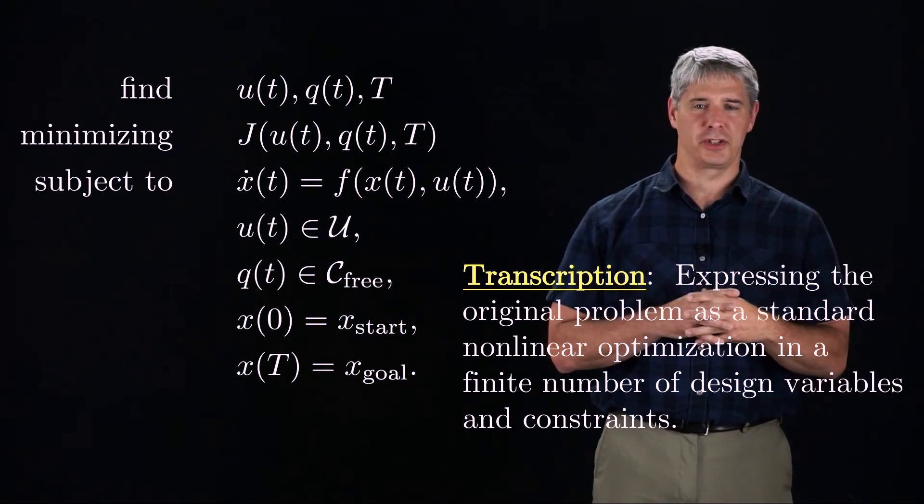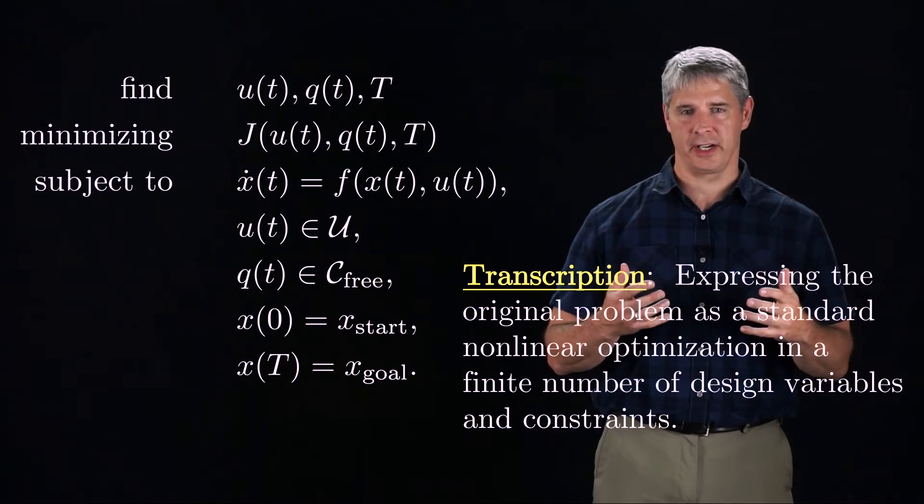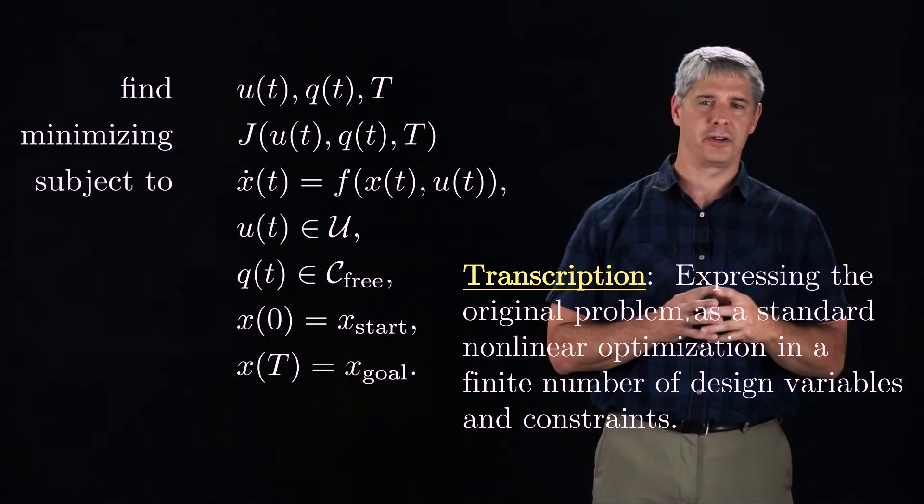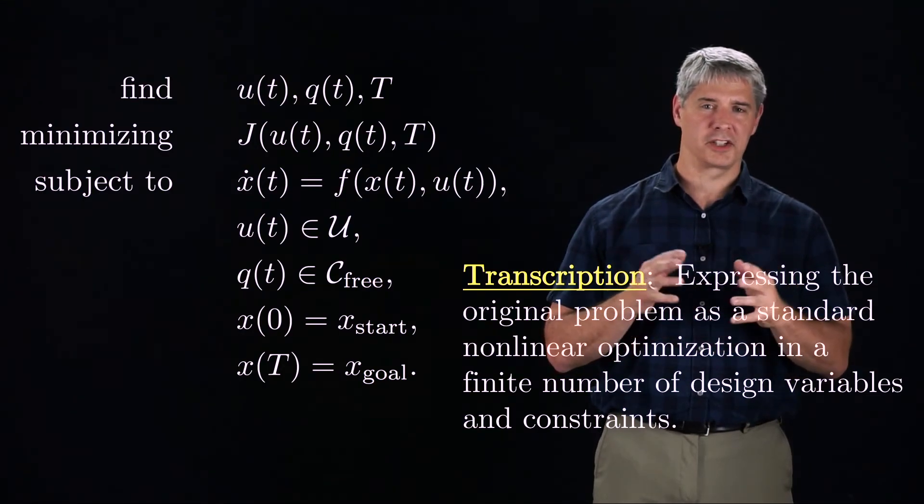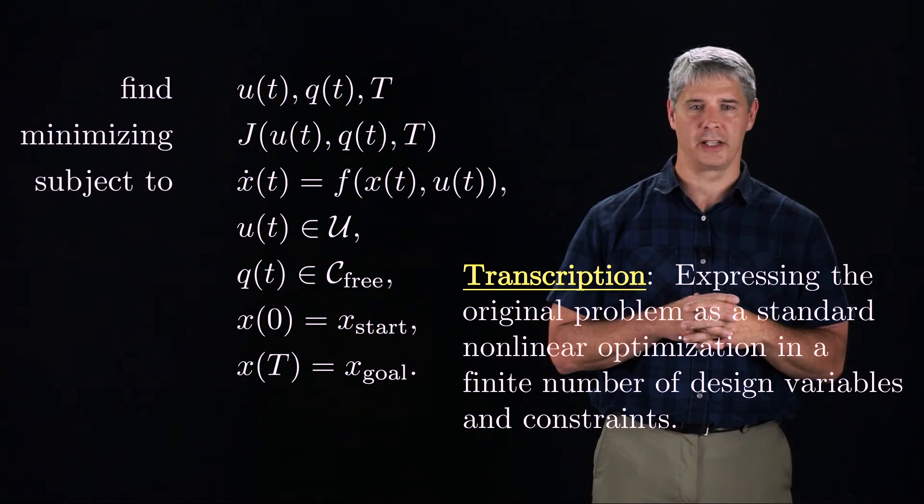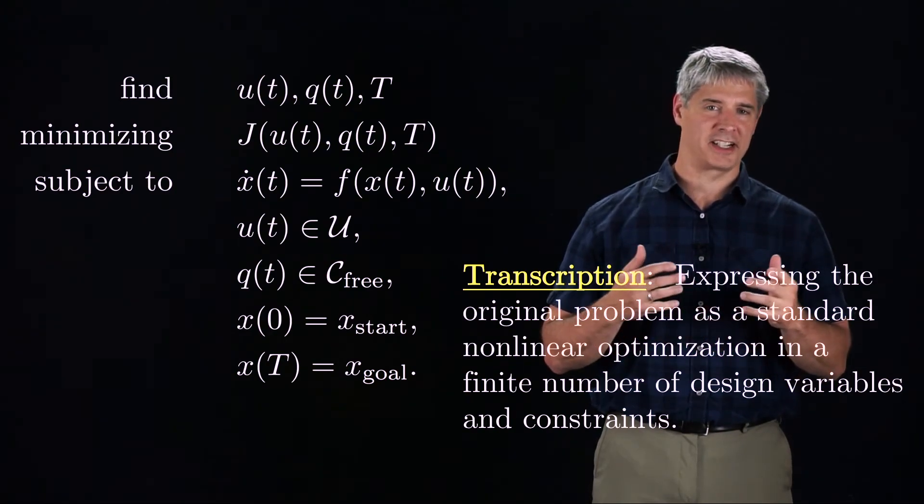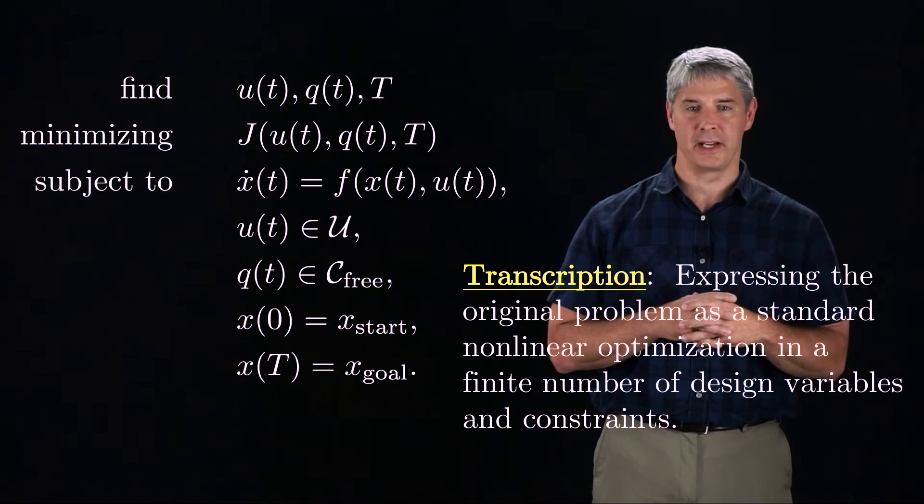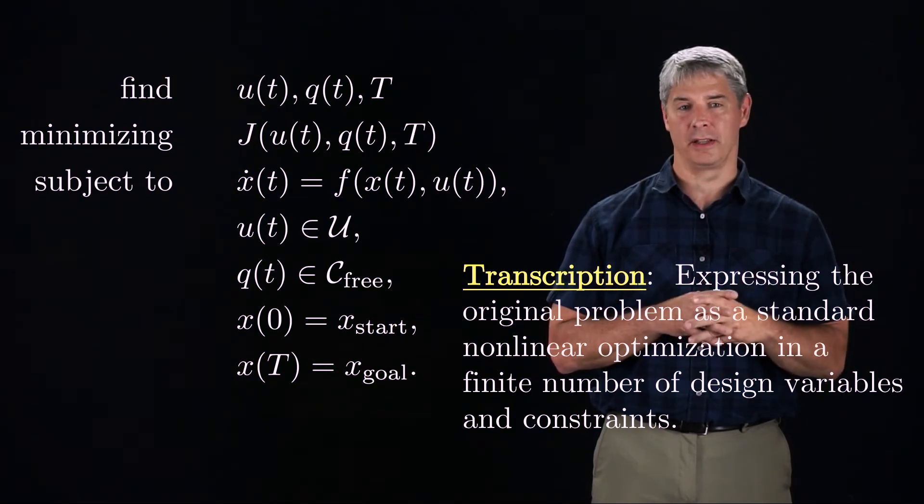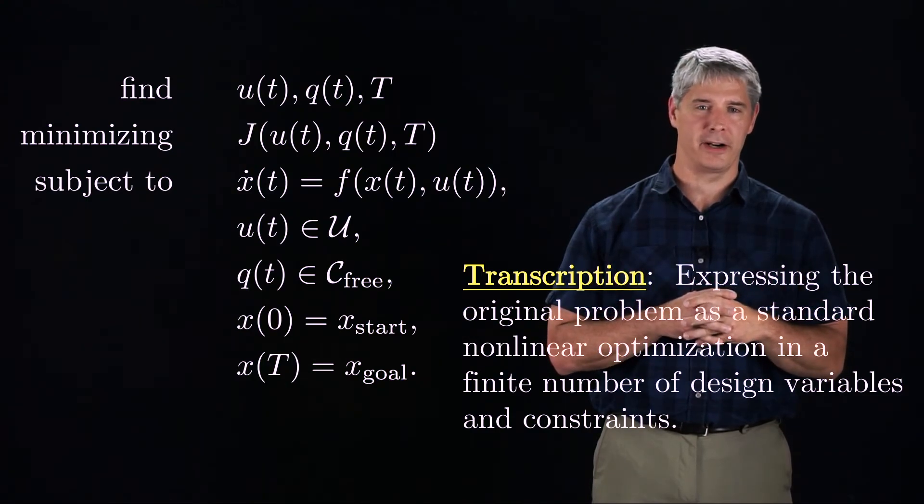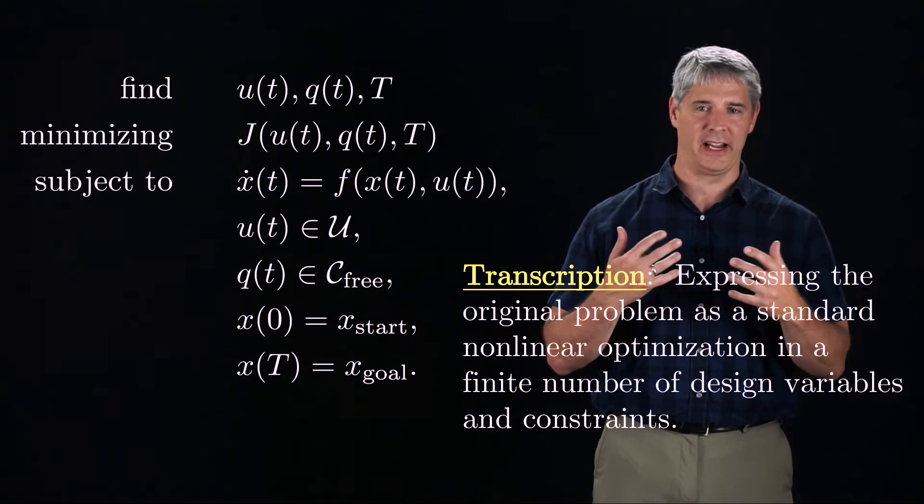There are many ways you could choose to represent the controls, trajectory, cost, and constraints, and your choice will affect the performance of the optimization. One thing that is critical, though, is that you are able to calculate the gradients of the cost and the constraints with respect to your design variables, as these gradients guide the search through the design variable space. Ideally, you would be able to calculate these gradients analytically, but failing that, you should be able to numerically evaluate them both efficiently and accurately.